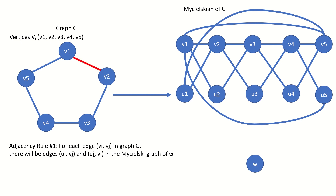In this example, the edge v1 v2 in G produces edges u1 v2 and u2 v1 in the Mycielsky graph of G. The edge v2 v3 in graph G produces edges u3 v2 and u2 v3. The edge v3 v4 in G produces edges u4 v3 and u3 v4. The edge v4 v5 produces edges u5 v4 and u4 v5. And finally, the edge v5 v1 produces edges u5 v1 and u1 v5.